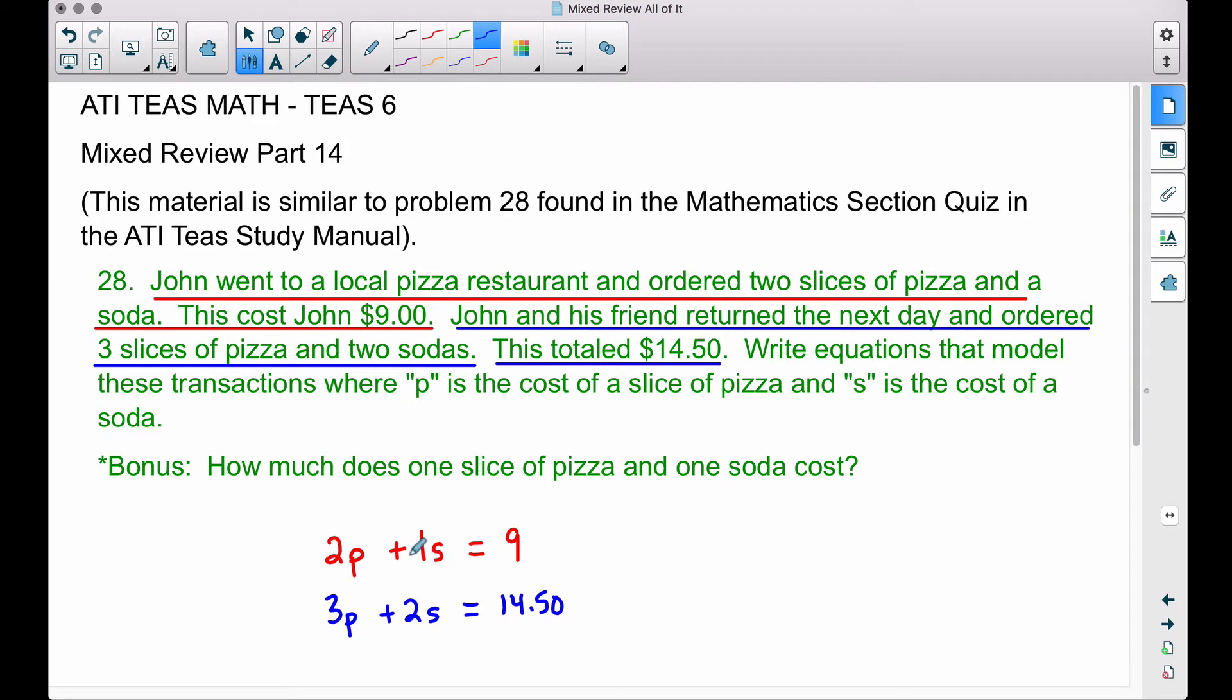We have a P and we have an S. P is the cost of one slice of pizza, S is the cost of one soda. When a system of equations is set up like this, we're going to have two equations. Since we have two unknowns, we can actually find the cost of a single soda or the cost of a single slice of pizza.